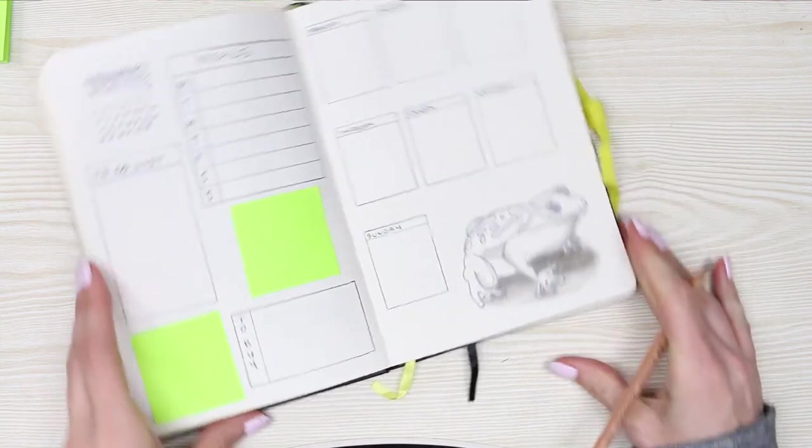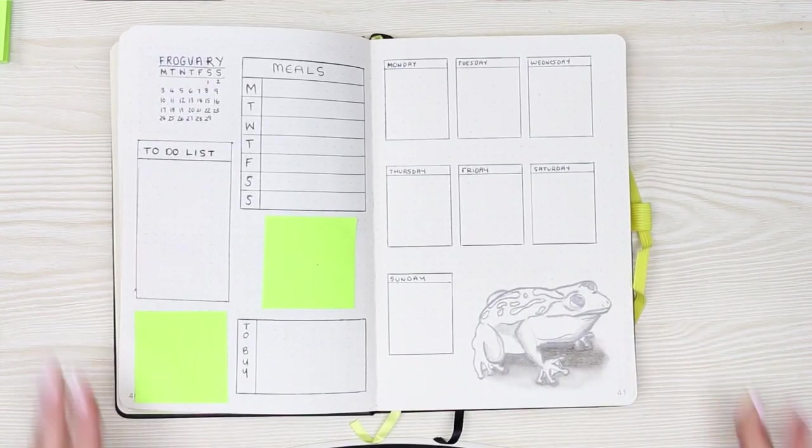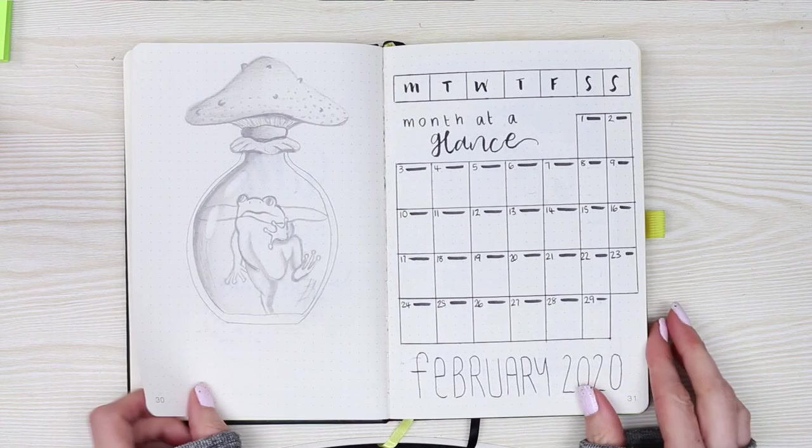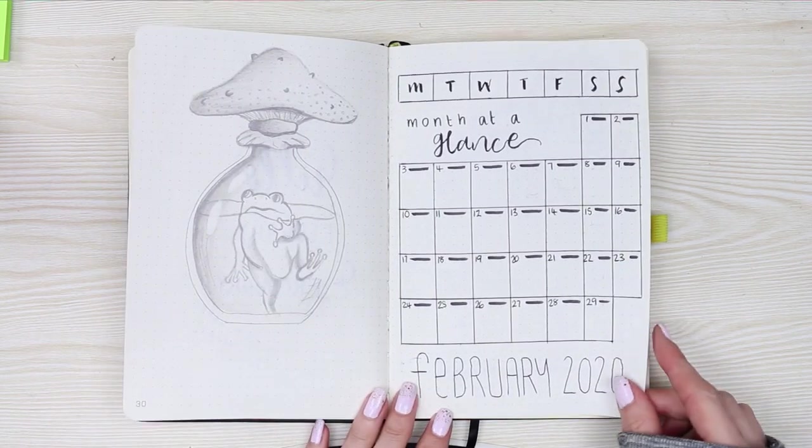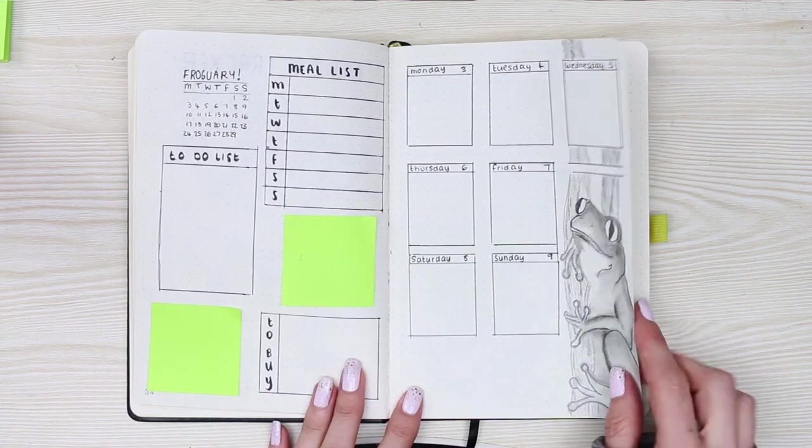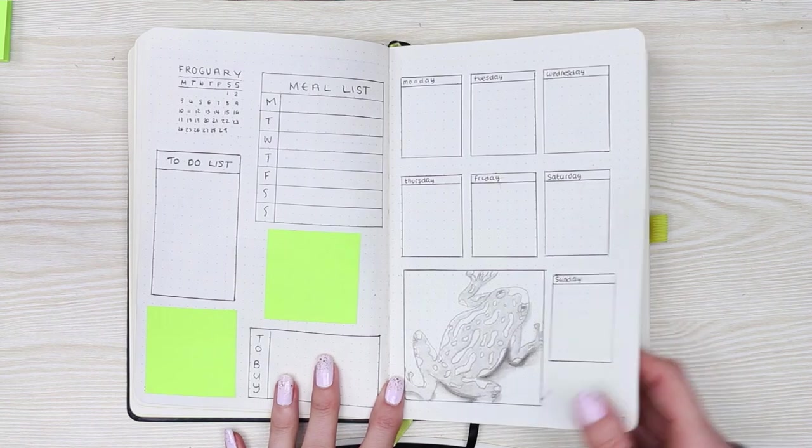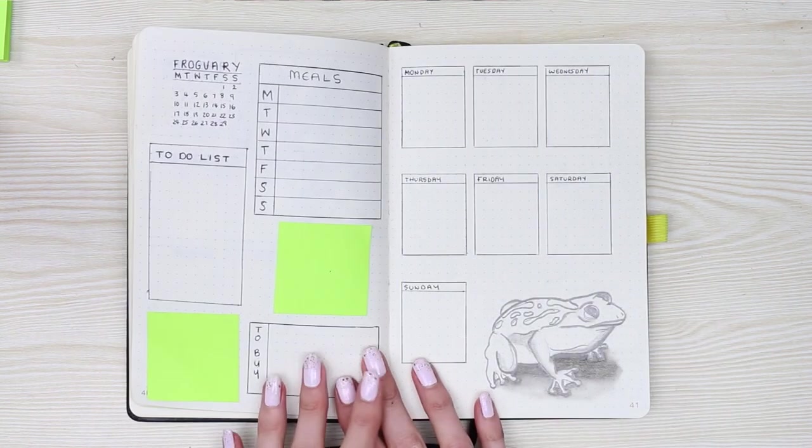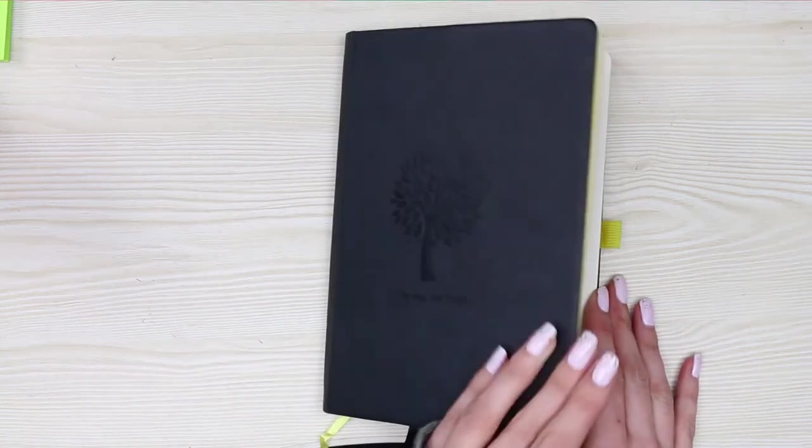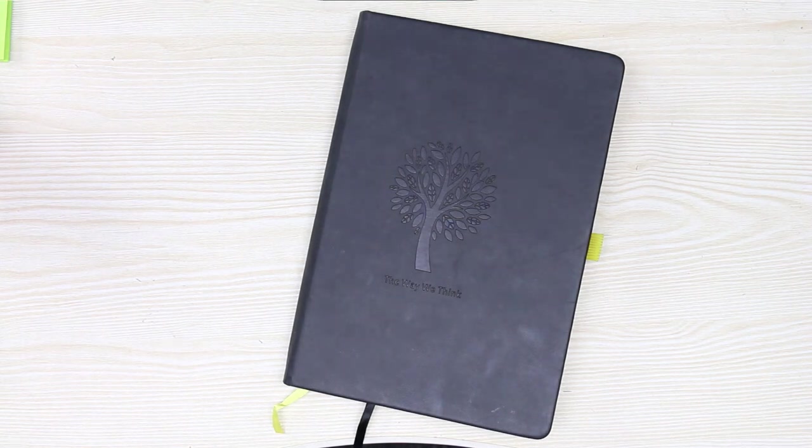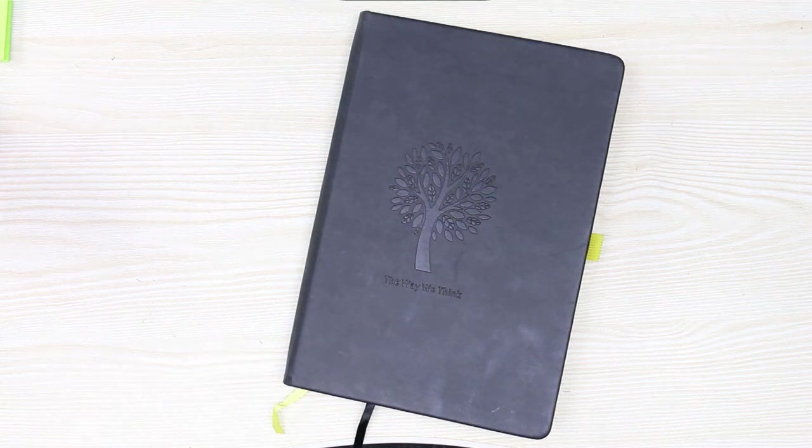But yeah, definitely getting back into doing some February plan with me, so make sure you look out on my channel for that. But here's a flip-through of how Froguary ended up looking. I hope you guys have enjoyed this sketchy vibe for Froguary. Definitely let me know down in the comments if you would like to see me sketch some more in my bullet journal. I know that we are in February, or nearly in February, and I'm only now saying this, but I hope you guys had a really good new year. I hope you are all having a lovely day so far, and I will speak to you next time. Bye, guys!